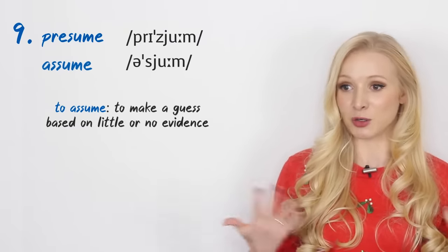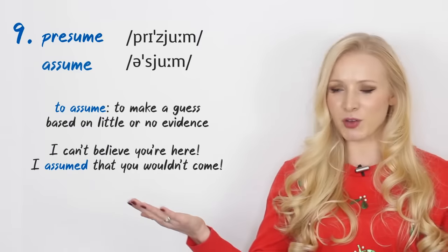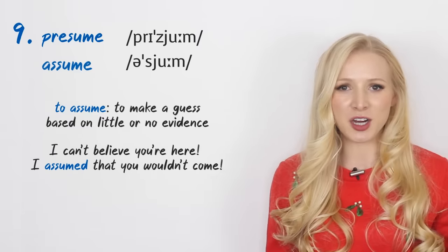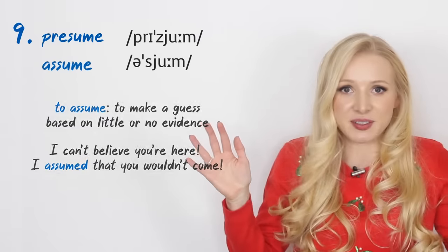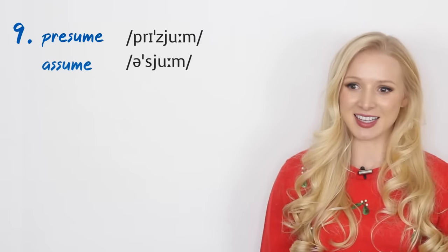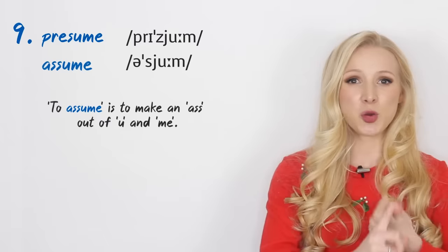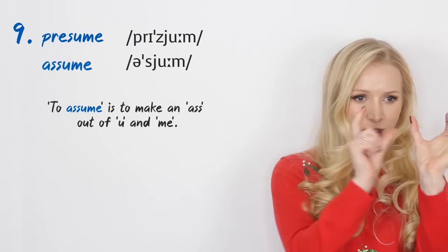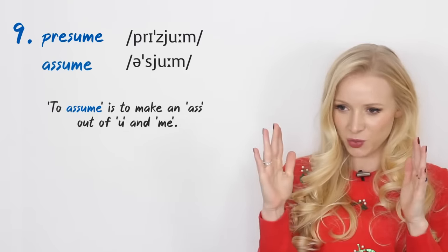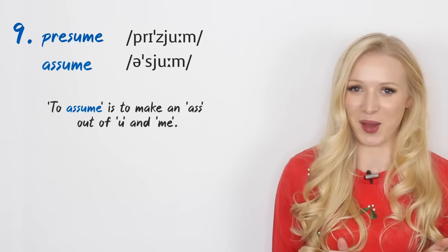To assume implies less confidence. It means it's based on little or no evidence. I can't believe you're here. I assumed you wouldn't come. I had no evidence for that. I just assumed it. I just supposed it. Now, a way that you can remember this is to say that to assume is to make an ass out of you and me. Ass, you, me - assume. I really liked that one.